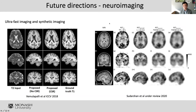Another interesting direction for neural imaging is ultra-fast imaging and synthetic imaging. Interesting work published at ICCV in 2018 demonstrated using T2 to reconstruct and synthesize a T1-weighted image without any T1 acquisition at all. They demonstrated reconstruction similar to T1 when compared with the ground truth. This type of work still needs a lot of quantitative validation, but it's a very interesting starting point that will help further speed up MR acquisition and reconstruction.